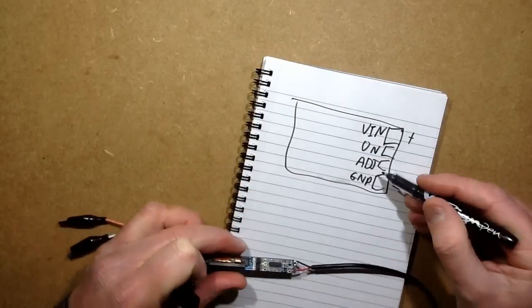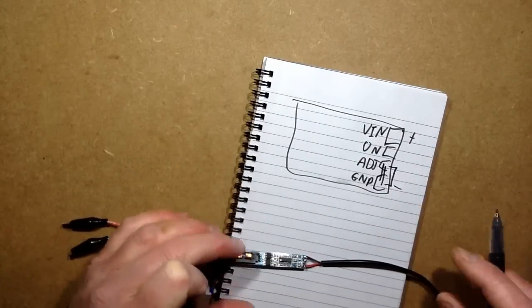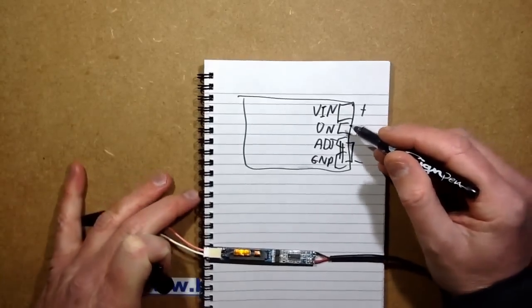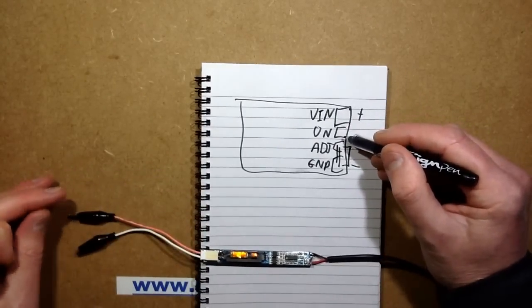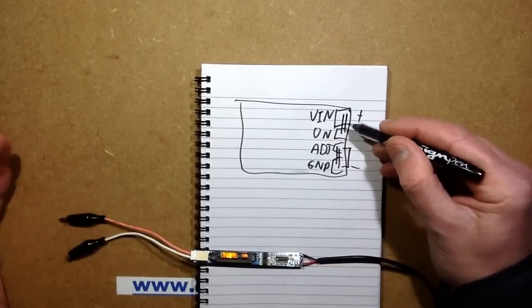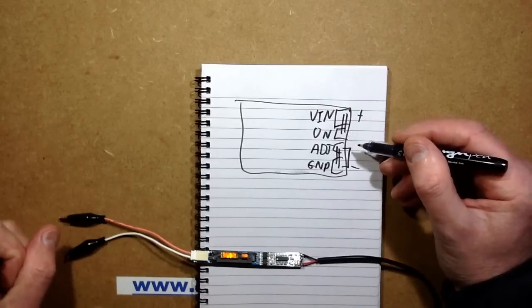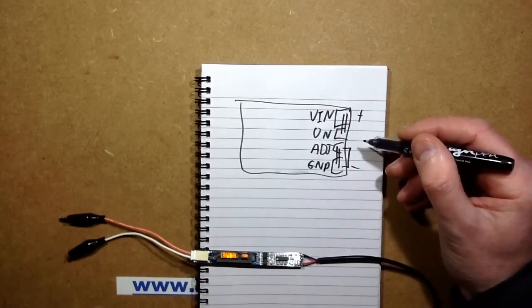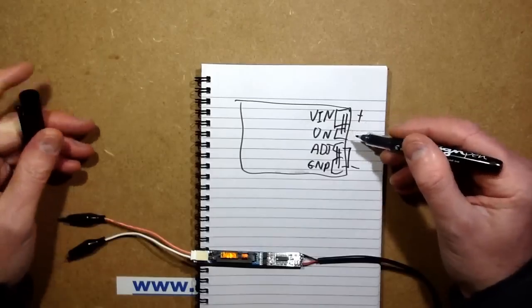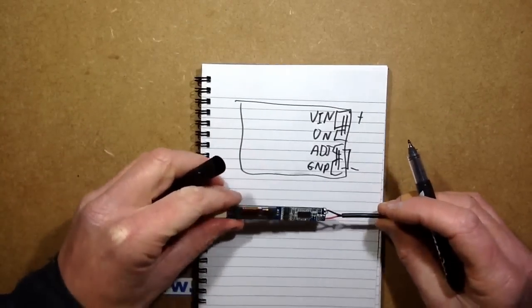And once again, if you connect adjust straight to negative, it brings it on at full output. The on, again, I think it's designed for 5 volts, but I bridged it straight to the 12 volt supply. And I measured the current that was flowing into it. It's only about 100 microamps. That doesn't guarantee it's an ideal way of driving it, but it certainly seems to work to bring the unit on. And it's the simplest way to bring the unit on.